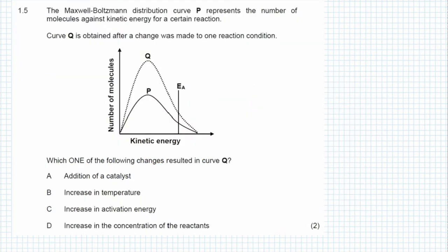Question 1.5 says the Maxwell-Boltzmann distribution curve P represents the number of molecules against kinetic energy for a certain reaction. Curve Q is obtained after a change was made to one reaction condition. Which one of the following changes resulted in curve Q?